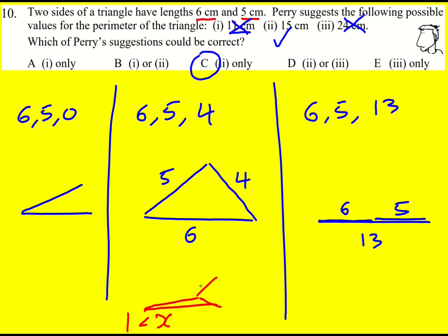If it was 1.5 it would only, it would look like this, it would have a very small height, and as we increase x it would get more of a height. Even 1.1, it wouldn't look much like a triangle but it would be a triangle.